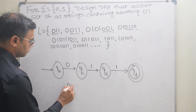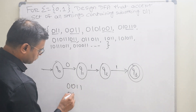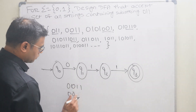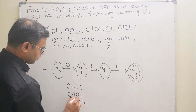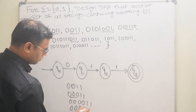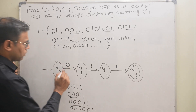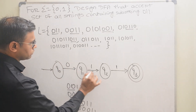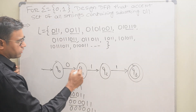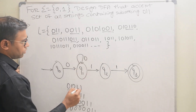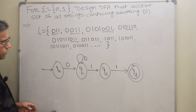There can be any number of leading zeros before 011 — for example 011, 0011, 00011, 000011, and so on. To handle any number of leading zeros, we apply a self-loop of '0' on q0, so q0 on input '0' loops back to q0 and accepts any number of zeros.